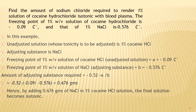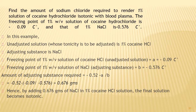Example: find the amount of sodium chloride required to render a 1% solution of cocaine hydrochloride isotonic. Given: freezing point of 1% cocaine hydrochloride = −0.09°C; freezing point of 1% sodium chloride = −0.576°C. Applying the formula: (−0.52 − (−0.09)) / 0.576 = 0.676 g of sodium chloride required to render 1% cocaine hydrochloride solution isotonic.